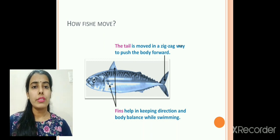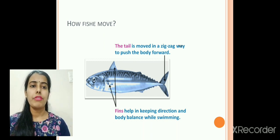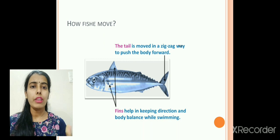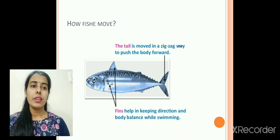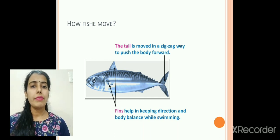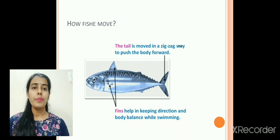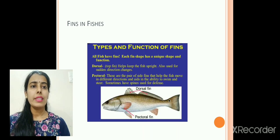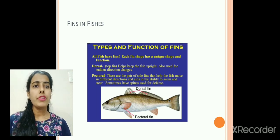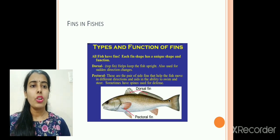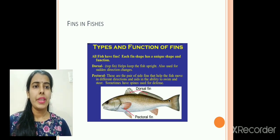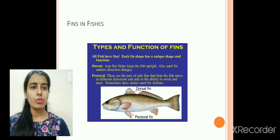Fishes have different types of fins — tail fin, dorsal fin, and caudal fin — and different fins have different functions. The tail fin helps in movement in a zigzag way to push the body forward. Other fins help in balancing, preventing the fish from toppling in water. All fishes have fins, and each fin has a unique shape and function. The dorsal fin helps the fish to keep upright and assists with sudden direction changes.